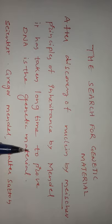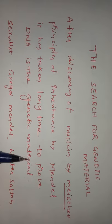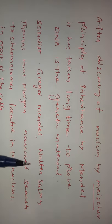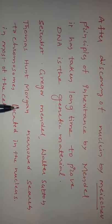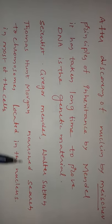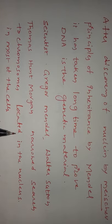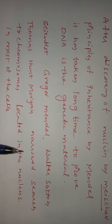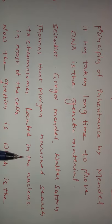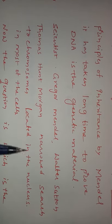The scientist Griffith first proved that DNA is the genetic material. Scientists Gregor Mendel, Walter Sutton, and Thomas Hunt Morgan had narrowed the search to chromosomes. Chromosomes are located in the nucleus, but the question remained: which is the genetic material — the chromosome, the gene, or DNA?